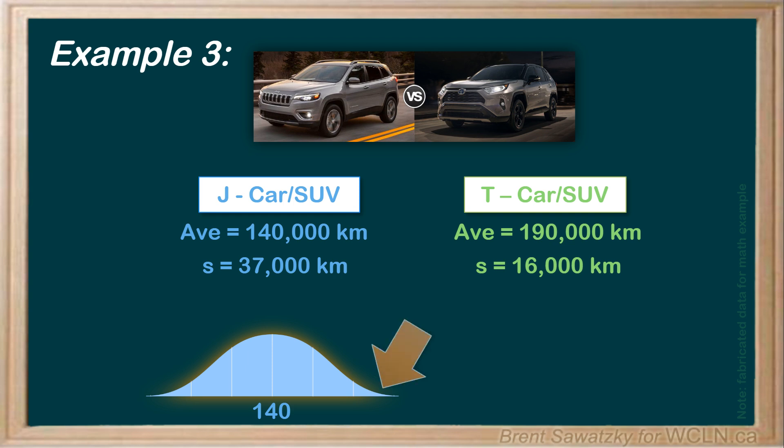Well, car J's distribution curve is centered around 140,000 and has a big spread of results. Some cars did really well, well, others did really poorly. Car T's curve is centered around 190,000 and is much narrower and taller. That is, a good portion of the cars were close to the average. A much more consistent and predictable result.